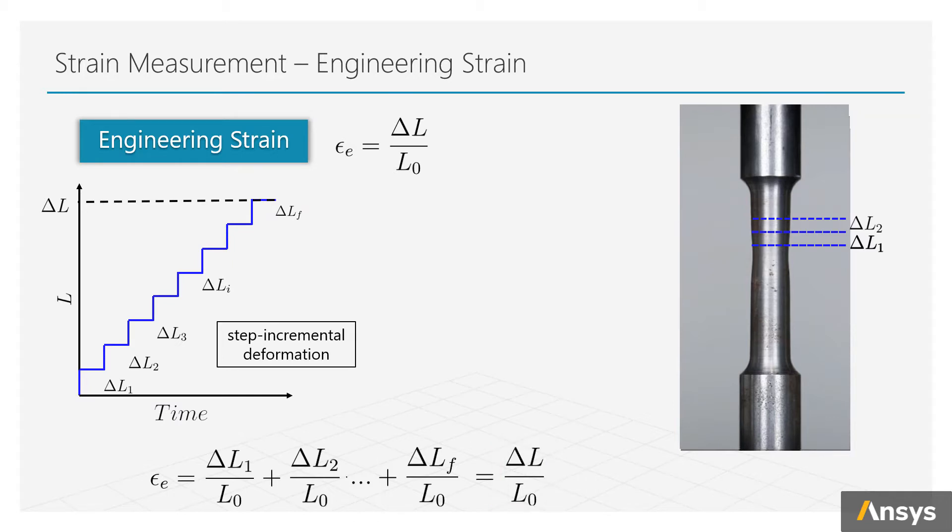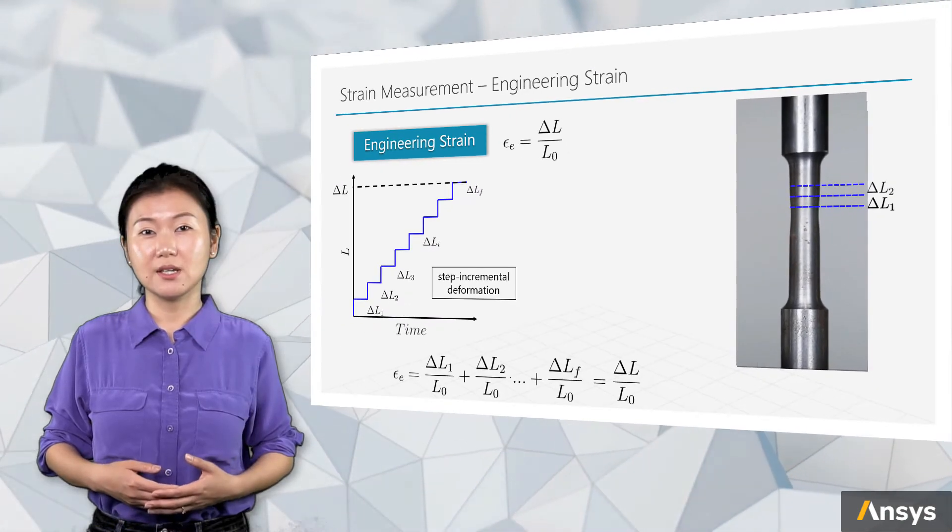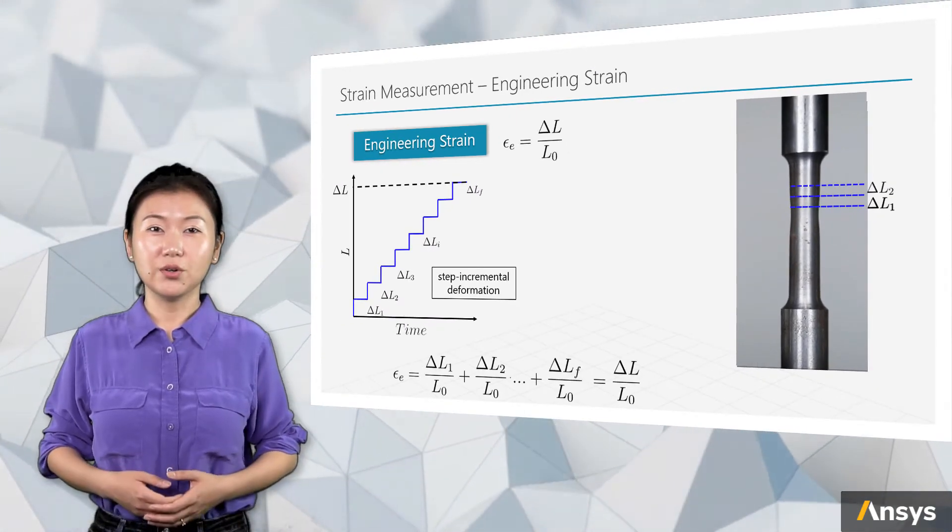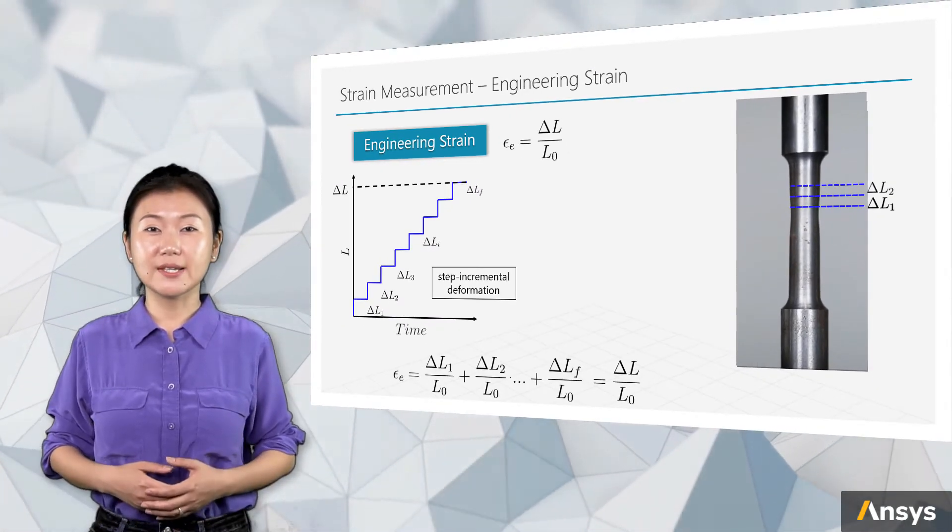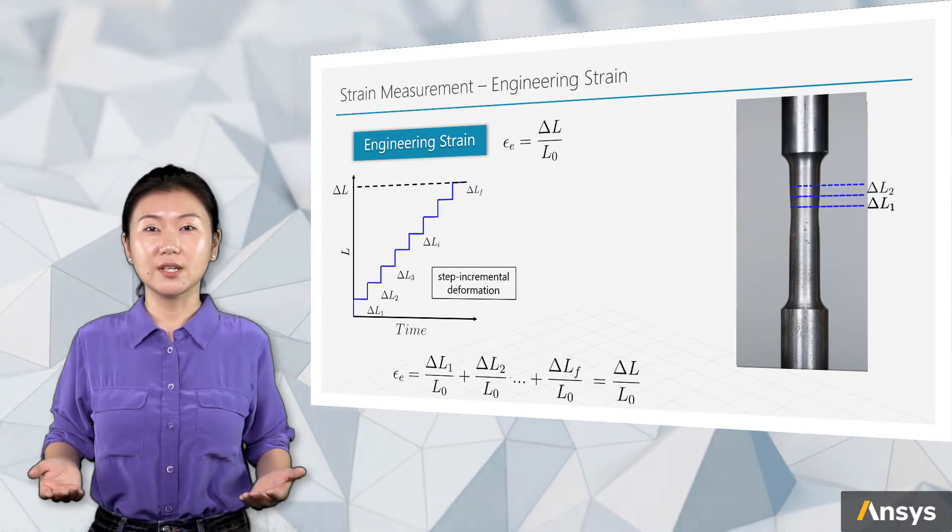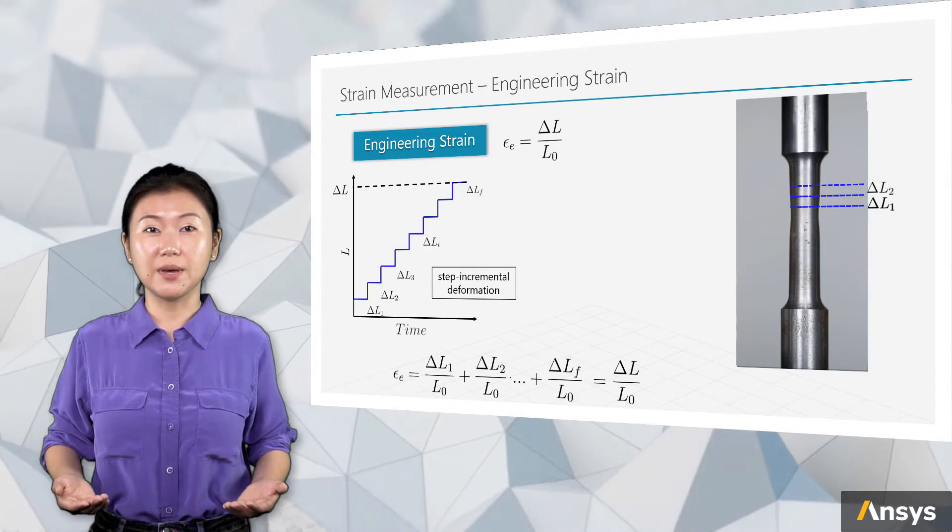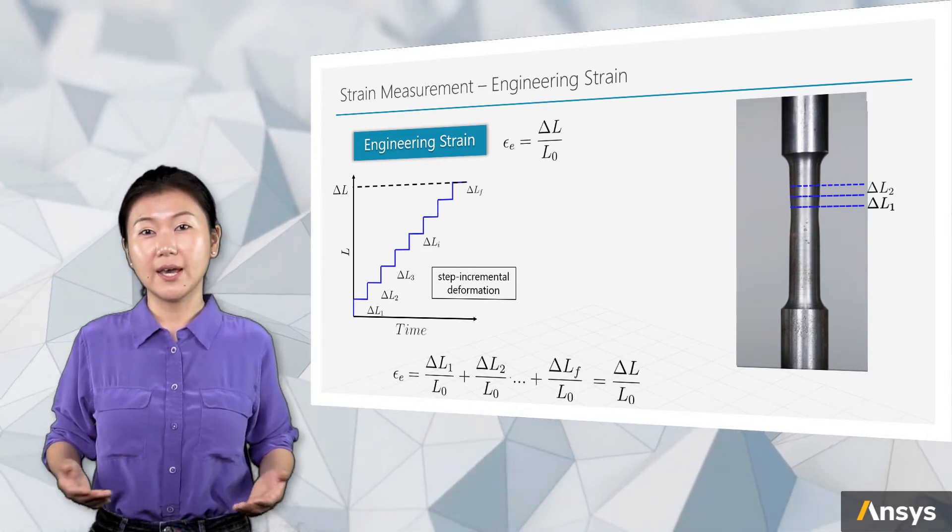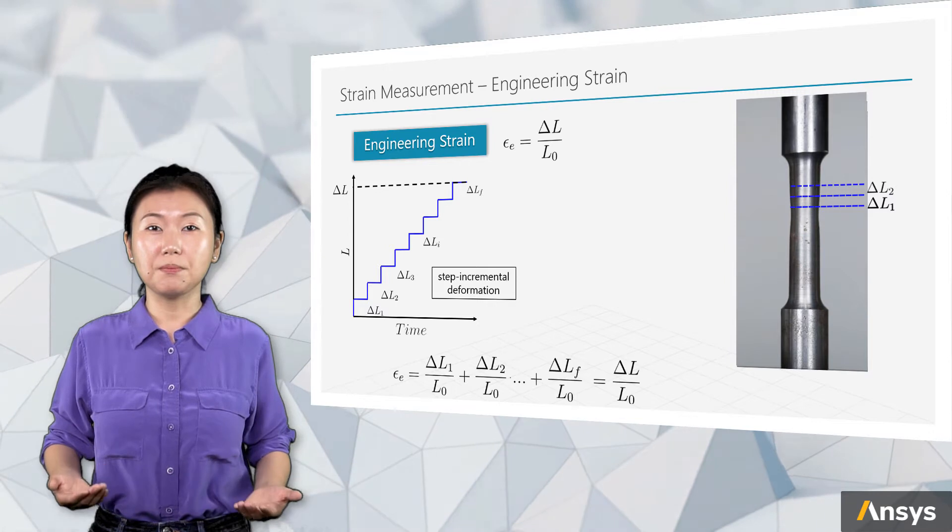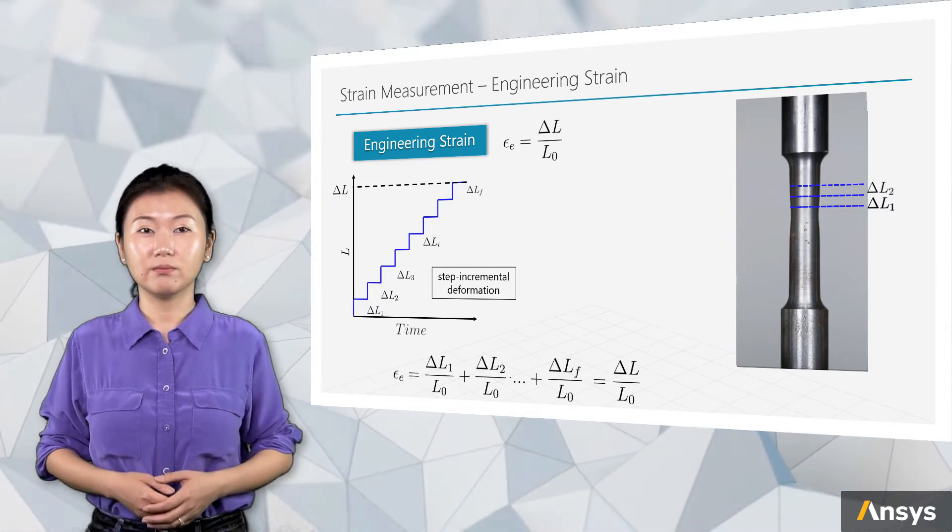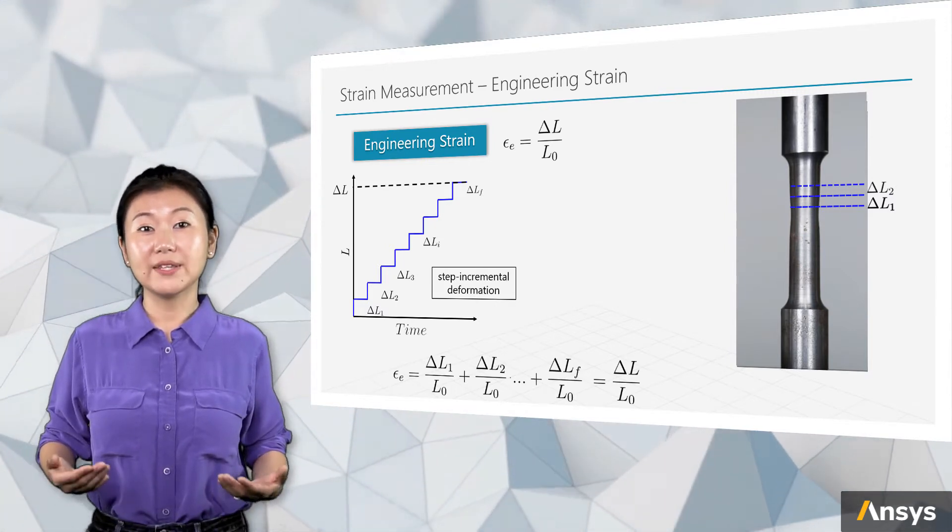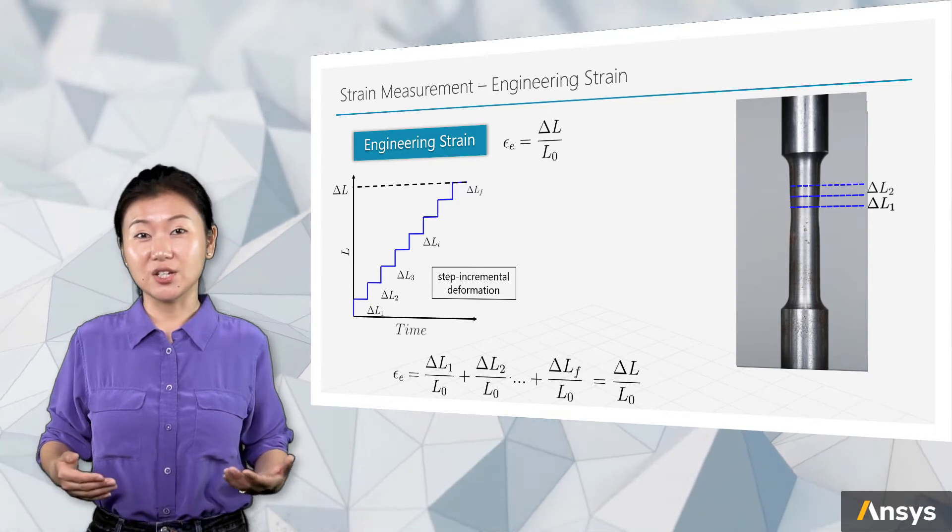So this zigzag kind of presentation of deformation process, is it natural? No. In real life, the deformation process is almost always continuous instead of step jump like this. Here, the assumption is made in order to have such a simplified strain definition. And engineers are easy to measure or calculate the value. And that's basically why this definition is named as engineering strain.